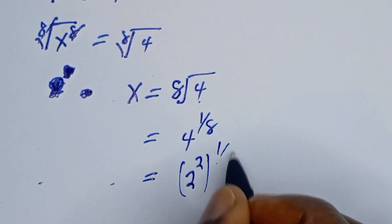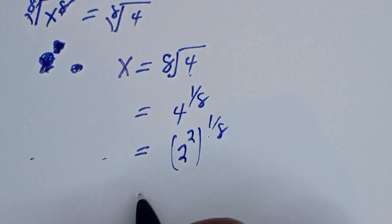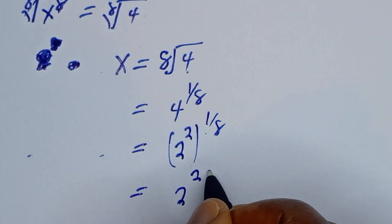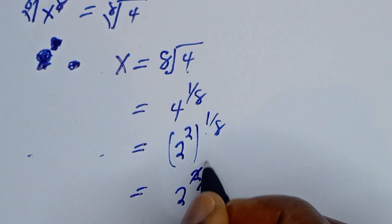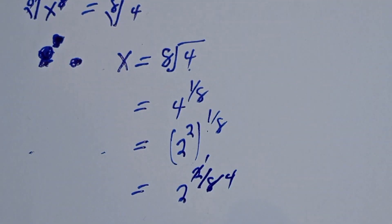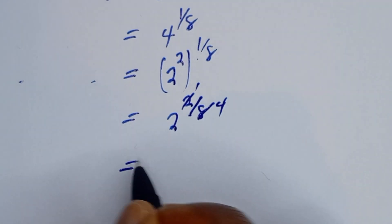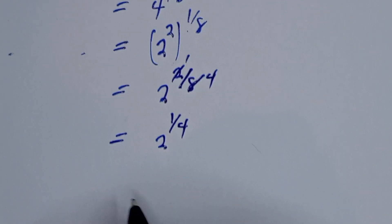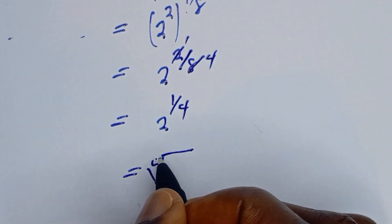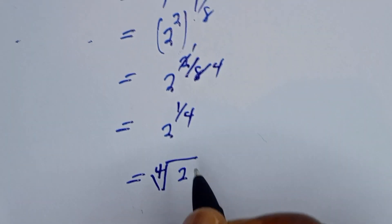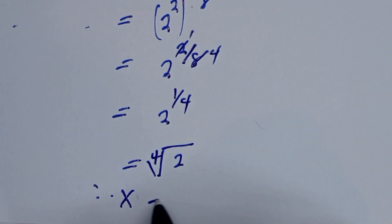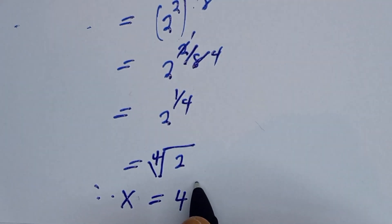Now, 4 to the power of 1 over 8 equals 2 squared to the power of 1 over 8, which is equal to 2 to the power of 2 times 1 over 8, which simplifies to 2 to the power of 1 over 4. This is equal to the 4th root of 2. Therefore, s is equal to the 4th root of 2.